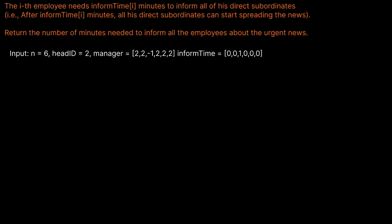So we've read the question prompt, but how do we actually solve this? Let's look at a simple example. In this example we have six employees, the head of the company has ID 2, this is the manager structure, and this is the inform time. Let's build the tree. We know there are six employees and the head of the company is 2, so this node is going to be the parent — basically the manager of everyone.